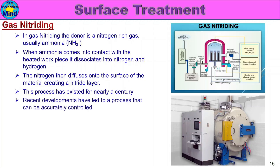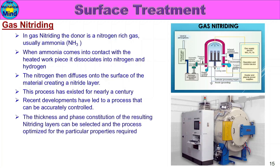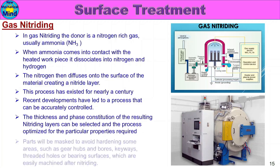This gas nitriding process has existed for nearly a century. Recent developments have led to a process that can be accurately controlled. The thickness and phase constitution of the resulting nitriding layers can be selected, and the process optimized for the particular properties required. Bearing surfaces which are easily machined after nitriding include gear hub bores, threads, and bearing surfaces.